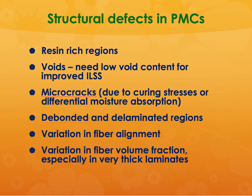You can also have debonding and delaminated regions. If the alignment of the fibers is not perfect or ideal, you can also get structural defects. Especially when going to very thick laminates, some matrix material can flow out, creating a variation in fiber volume fraction between different parts of the composite, which can also cause defects.